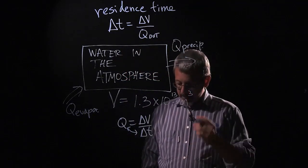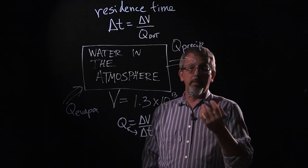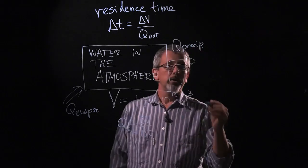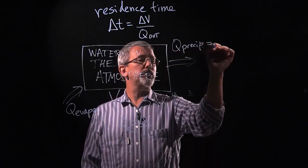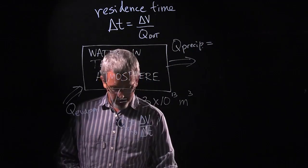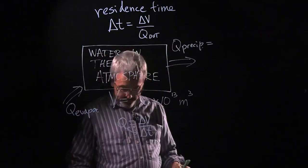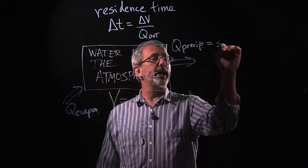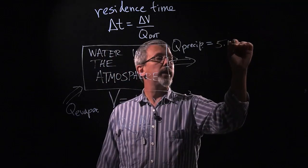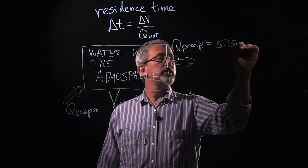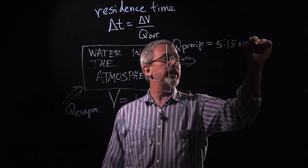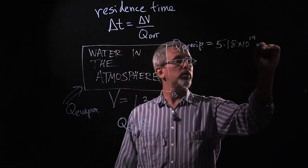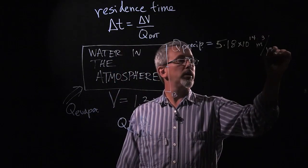So if we have a value here for the amount of precipitation, we can make estimates here that the amount of precipitation over the entire planet has a rate of 5.18 times 10 to the 14th meters cubed per year.